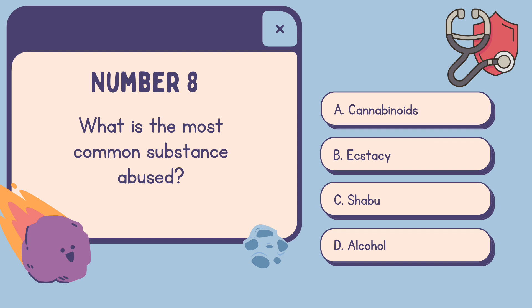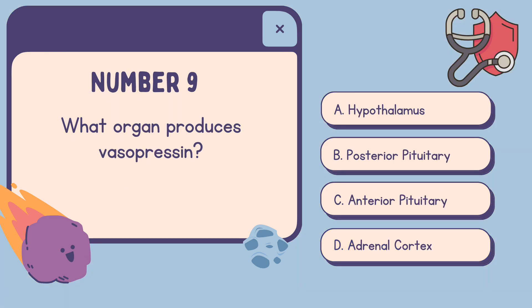Number 8: What is the most common substance abused? A. Cannabinoids, B. Ecstasy, C. Shabu, D. Alcohol. The correct answer is D, Alcohol.